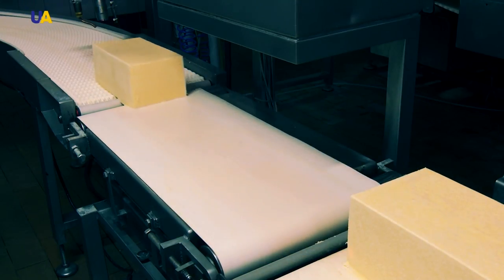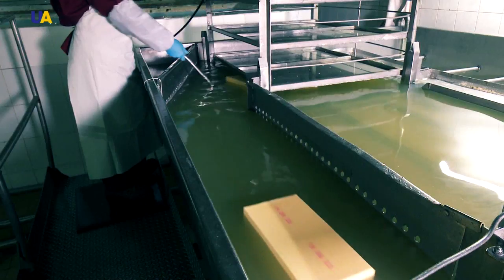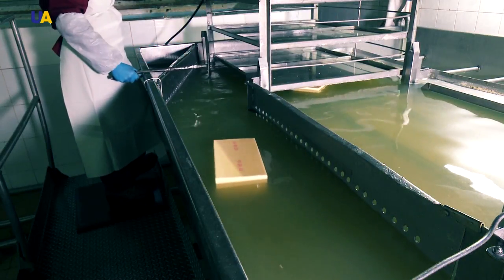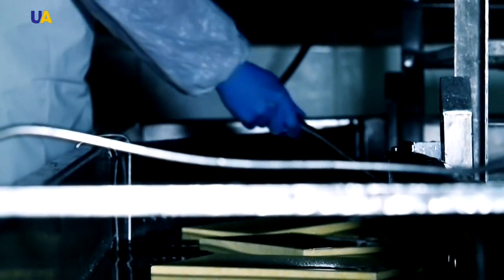The labeling is carried out on a special printer with the use of food coloring. But that's not all. The cheese is then sent to the salting department. Here it is placed in large basins of brine. The brine has a certain concentration of salt, temperature and quality.